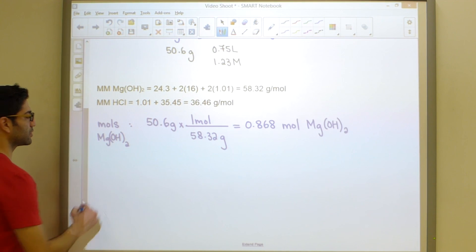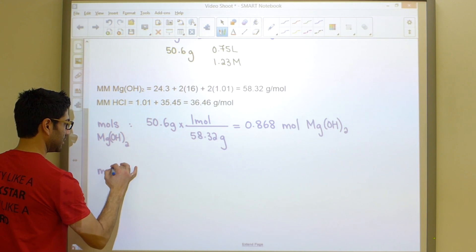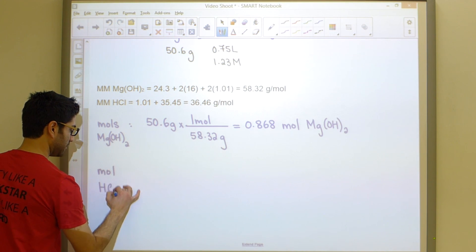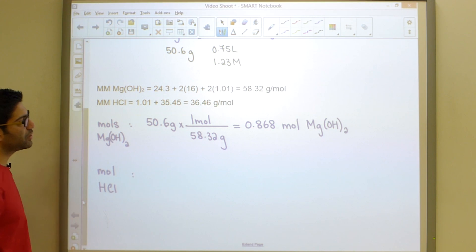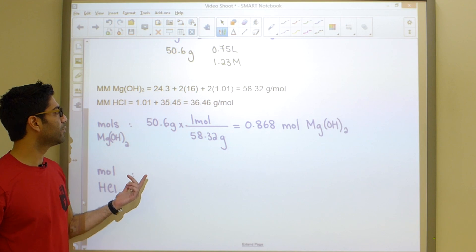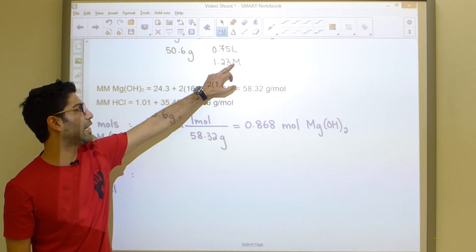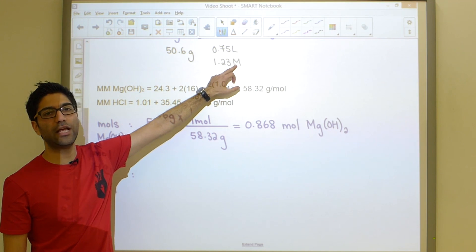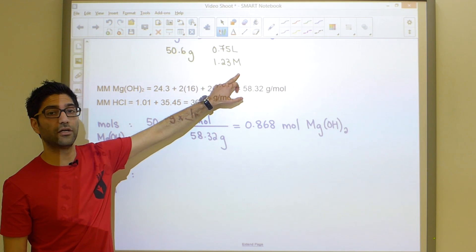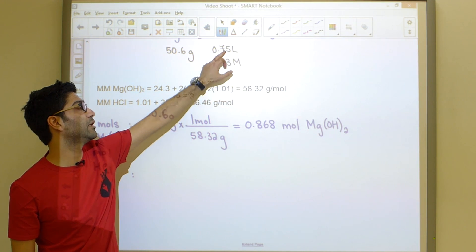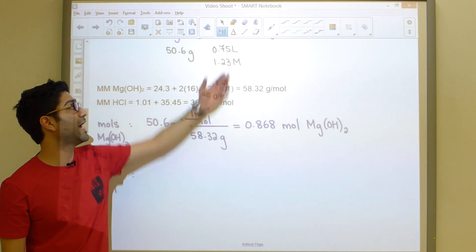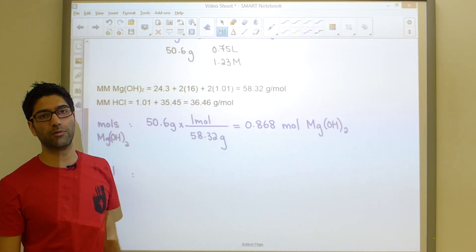Next, we need to find the moles of our second reactant, in this case HCl. To do this, since we are not given grams, we do not need this molar mass. Rather, understand that we're given a molarity. So molarity has units of moles per liter, and multiplying that by the number of liters we contain, we can quickly find the number of moles. We're going to take 0.750 liters and multiply this by the given molarity, 1.23 moles per liter.